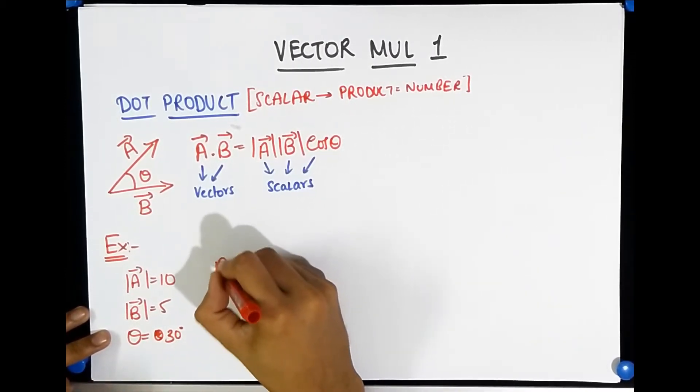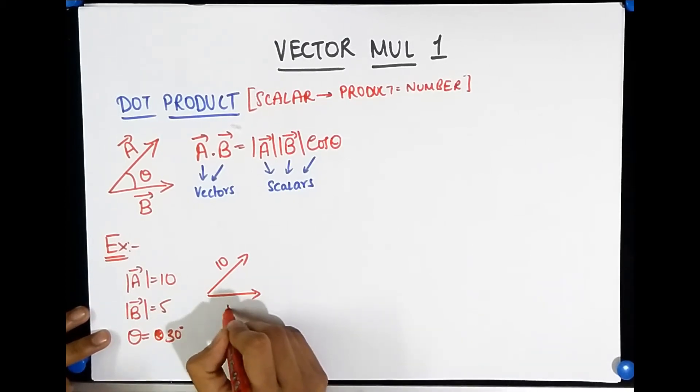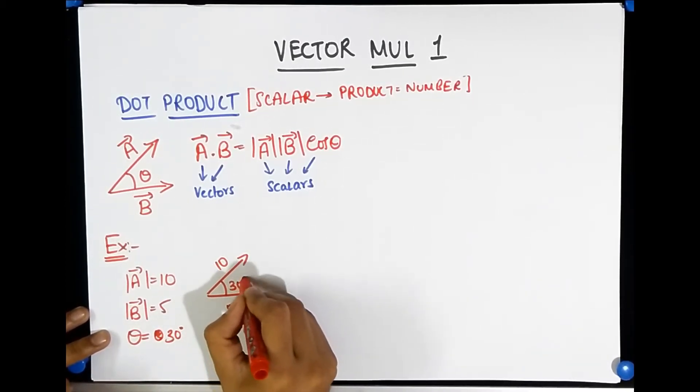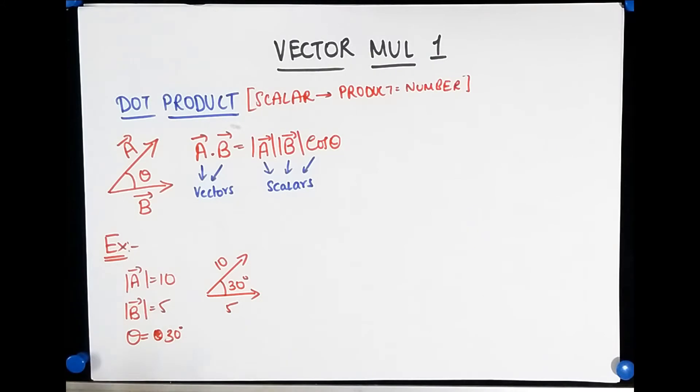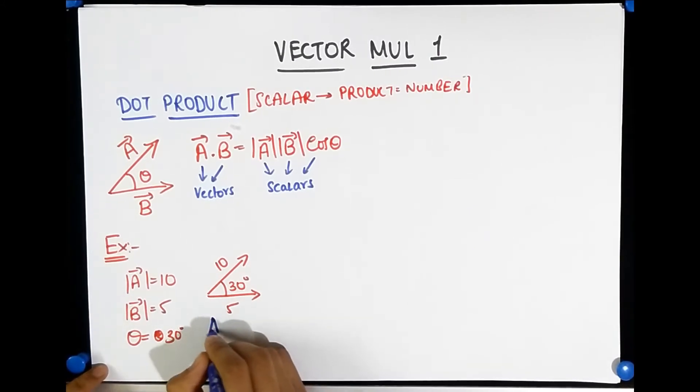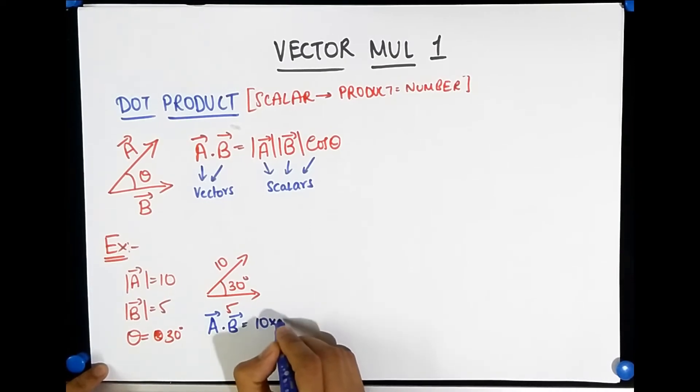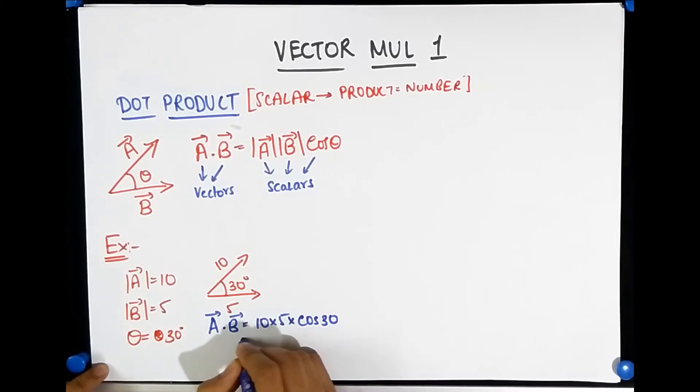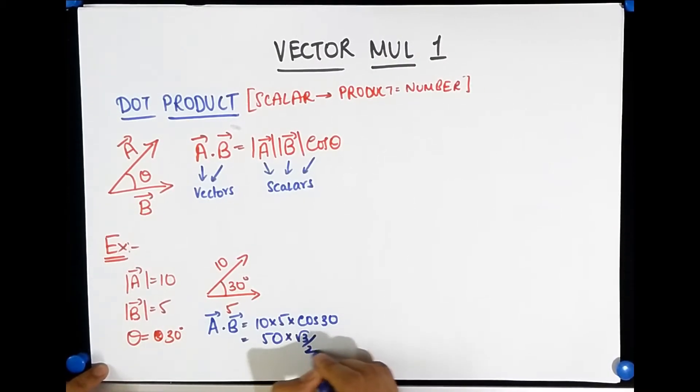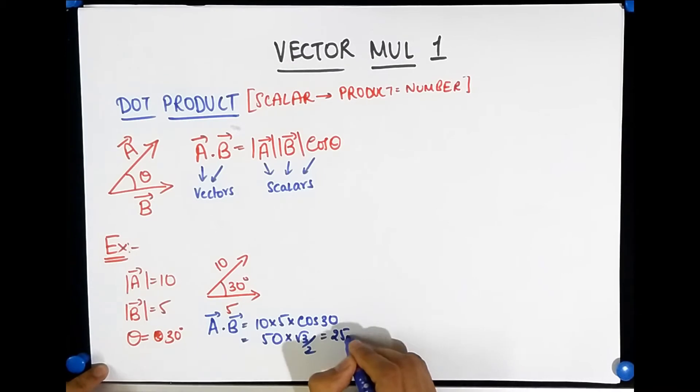Then the dot product, A dot B, will end up becoming 10 into 5 into cos 30, and that will give you 50 times root 3 by 2, which is 25 root 3.